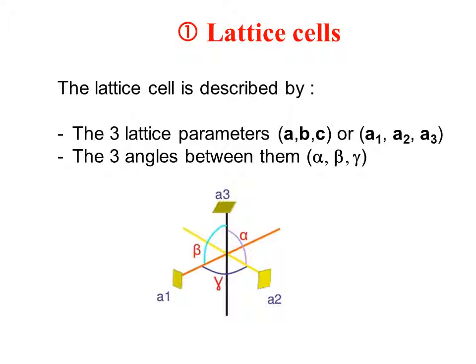Lattice cells are described by three vectors that we usually call a, b, and c, or a1, a2, and a3. Alternatively, we can use the modulus of the vectors and the angles between them to describe the cell, as depicted in the figure.